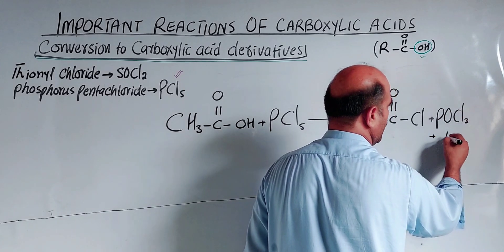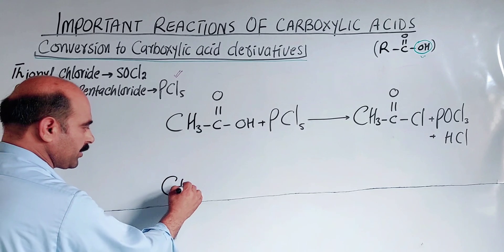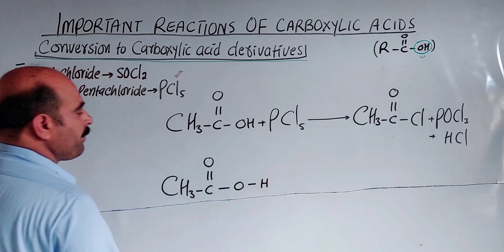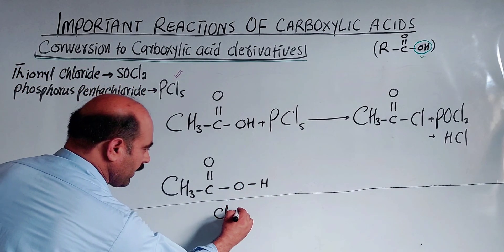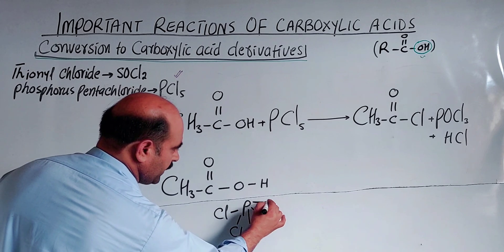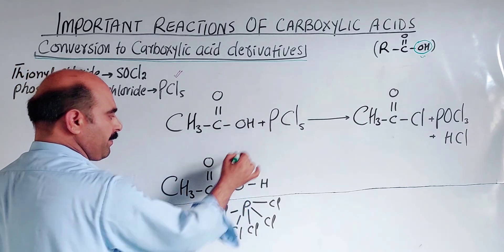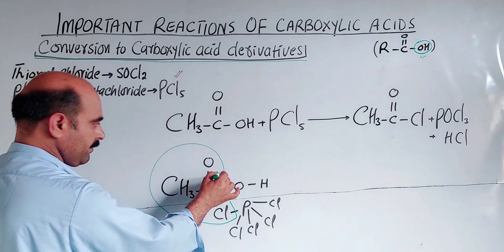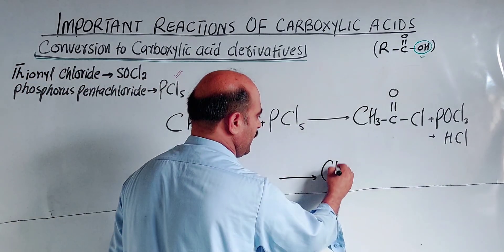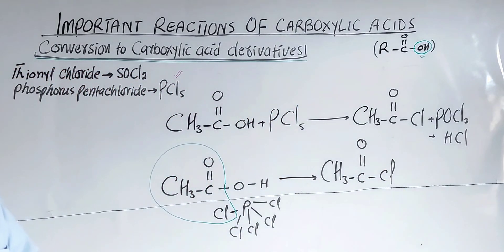The second reaction is with phosphorus pentachloride (PCl₅). In this reaction, the OH group of the carboxylic acid, for example CH₃COOH, is replaced by a chlorine atom from PCl₅. The product is an acyl chloride (CH₃COCl), along with phosphorus oxychloride (POCl₃) and HCl as byproducts.